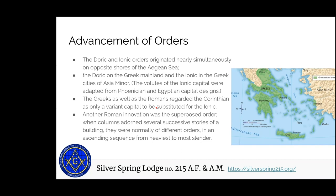Another Roman innovation was the superimposed order. In the old Senate Hall we saw a mix of Corinthian and Ionic columns, and the Roman innovation was that you could have different column types on different stories of a building — different orders based on the floor. You'd have the heaviest, most squat columns — Tuscan or Doric — on the bottom floor, Ionic in the middle, and then Corinthian or composite on the top level. They also had super columns which spanned the entire building.